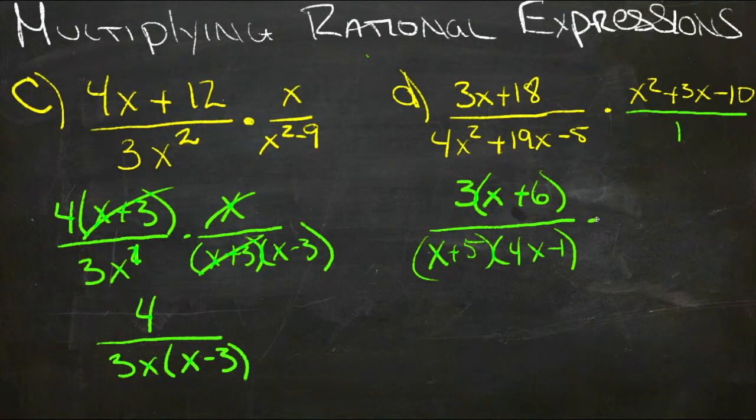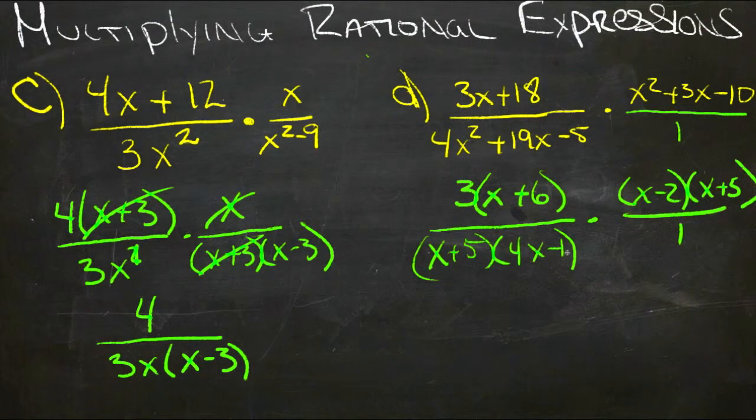And then this one over here is going to factor as, x minus 2 times x plus 5, looks like, over 1. Then we can cancel x plus 5s.